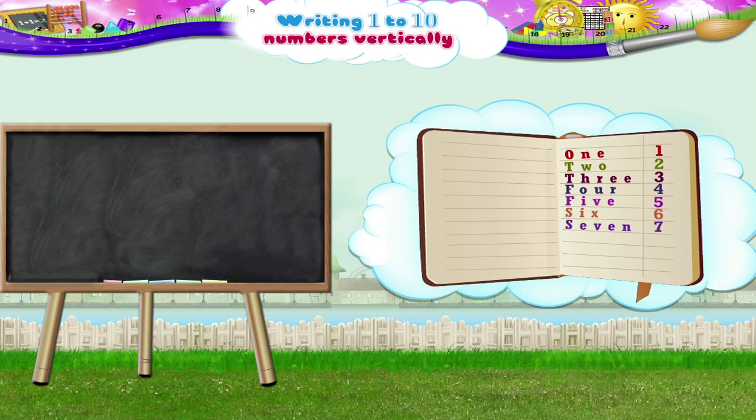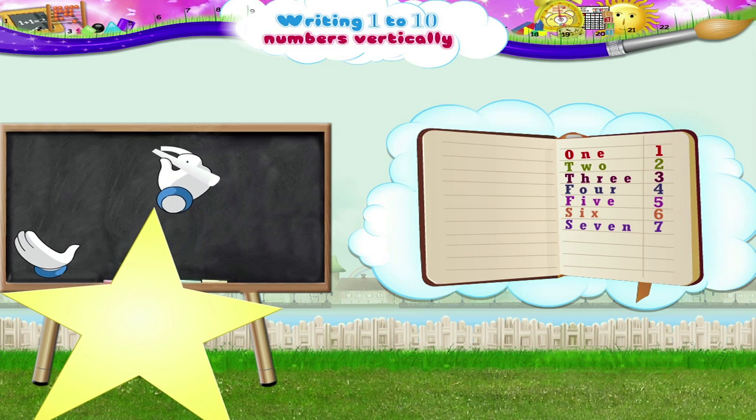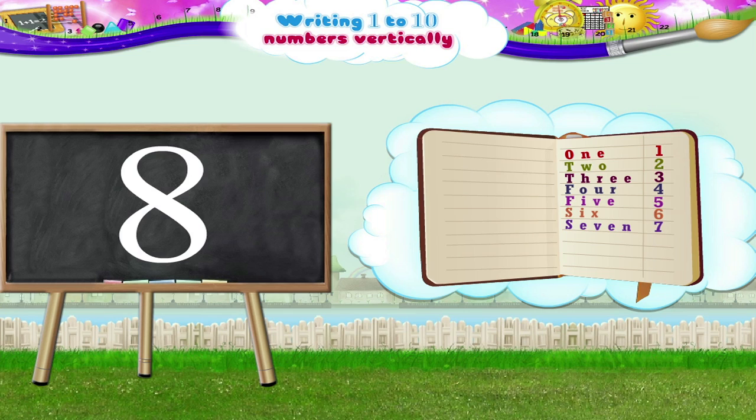And now, the number 8. Begin, move upwards in an anticlockwise direction to complete the circle. Next, move downwards in a clockwise direction to complete another circle. E-I-G-H-T, the number 8.